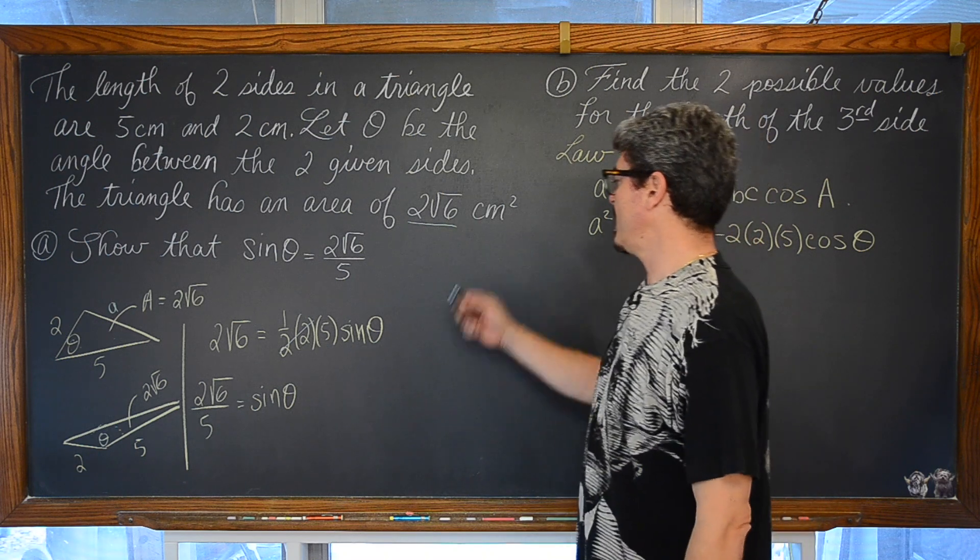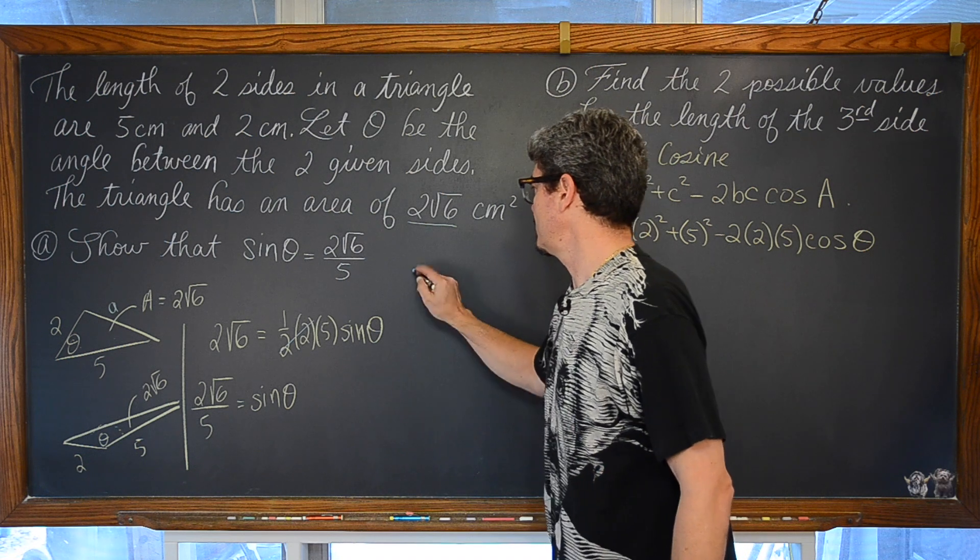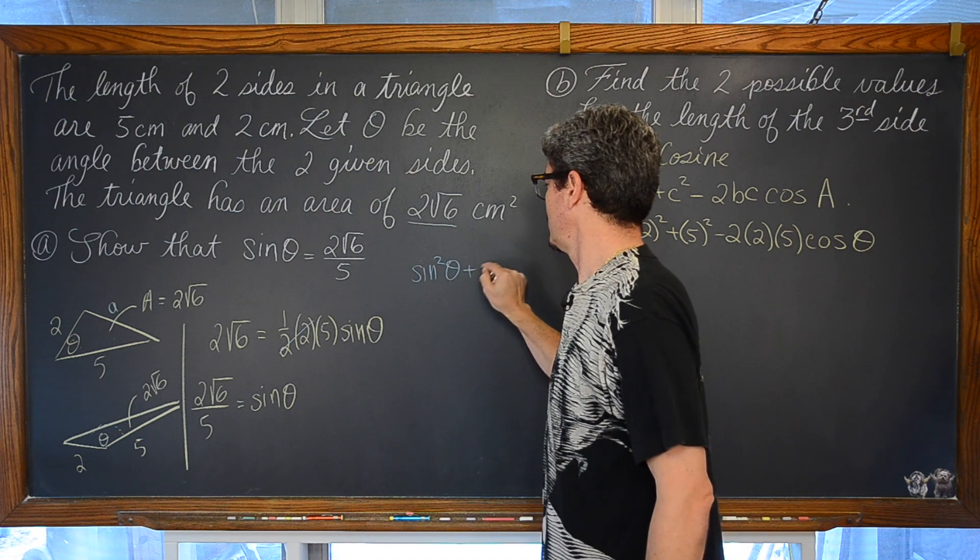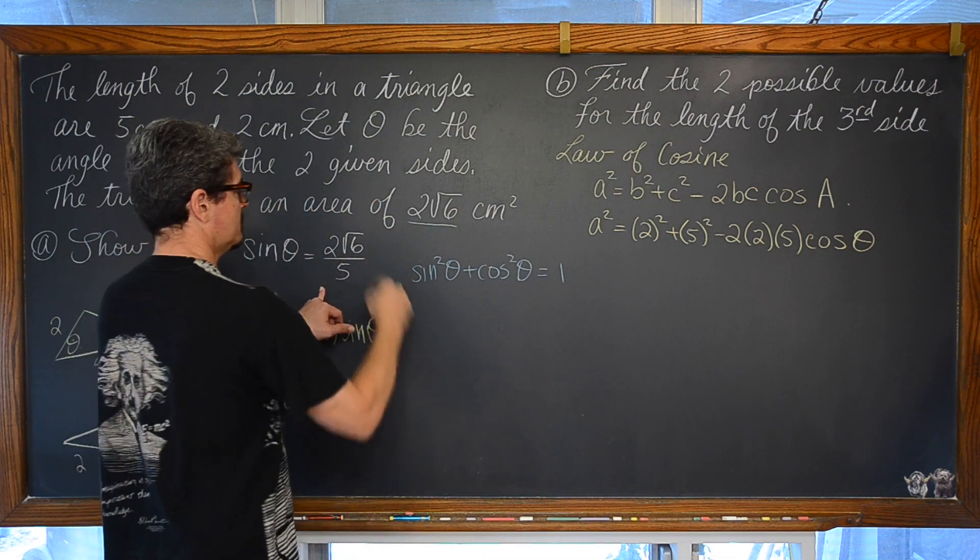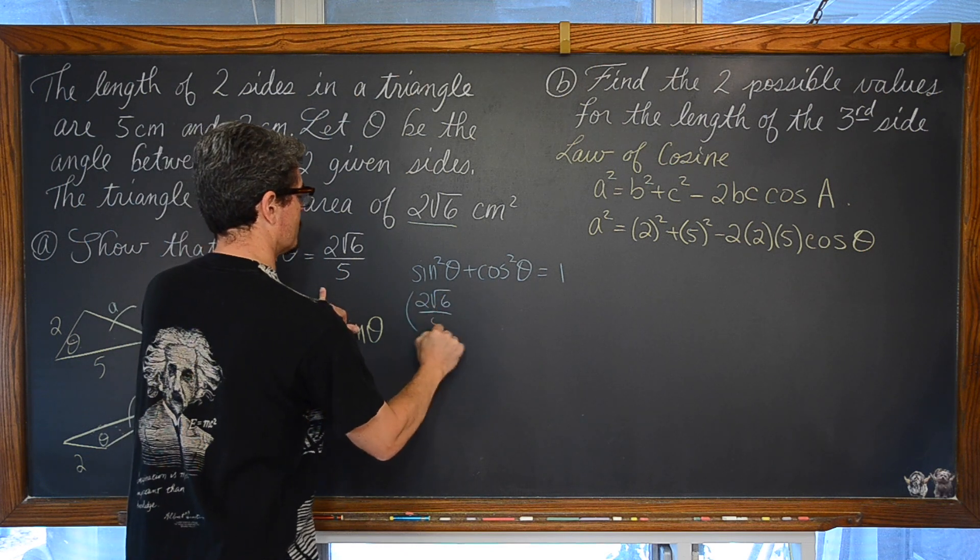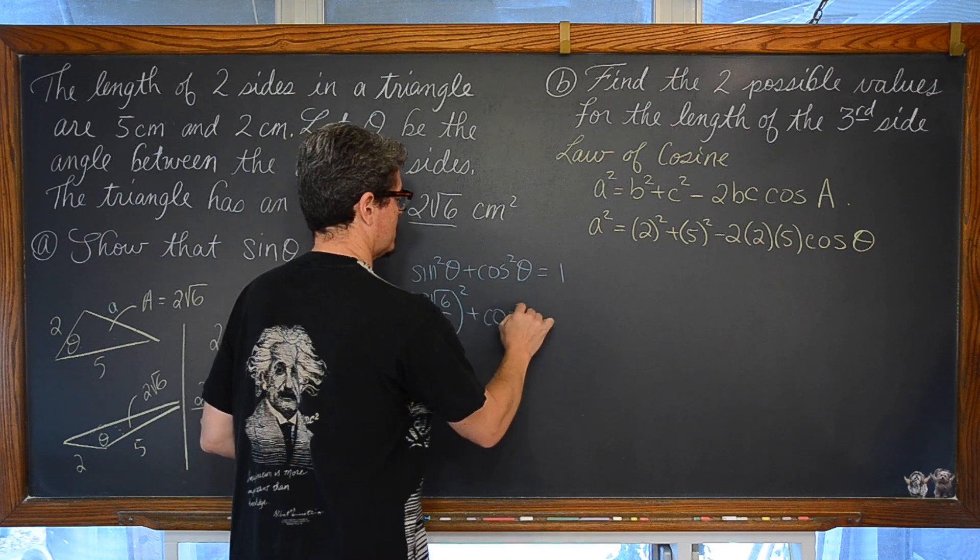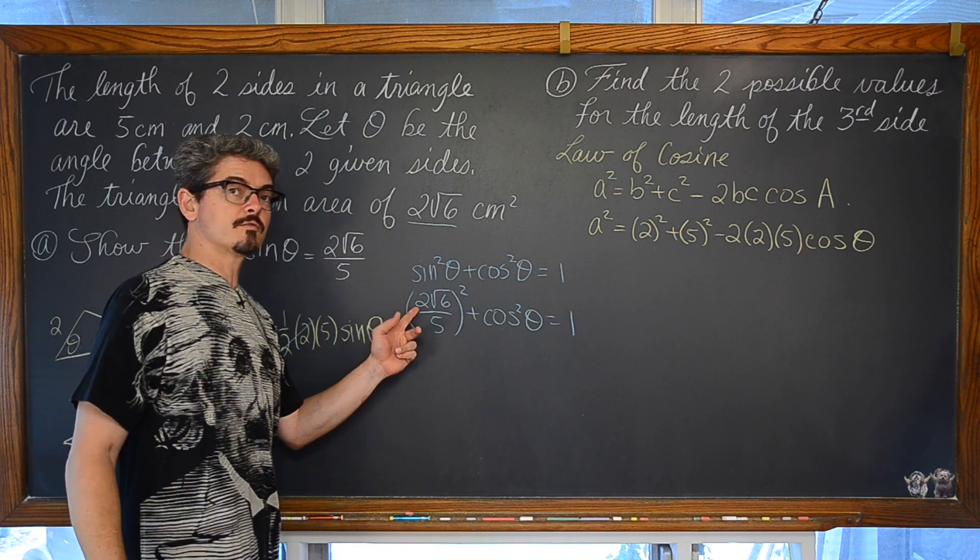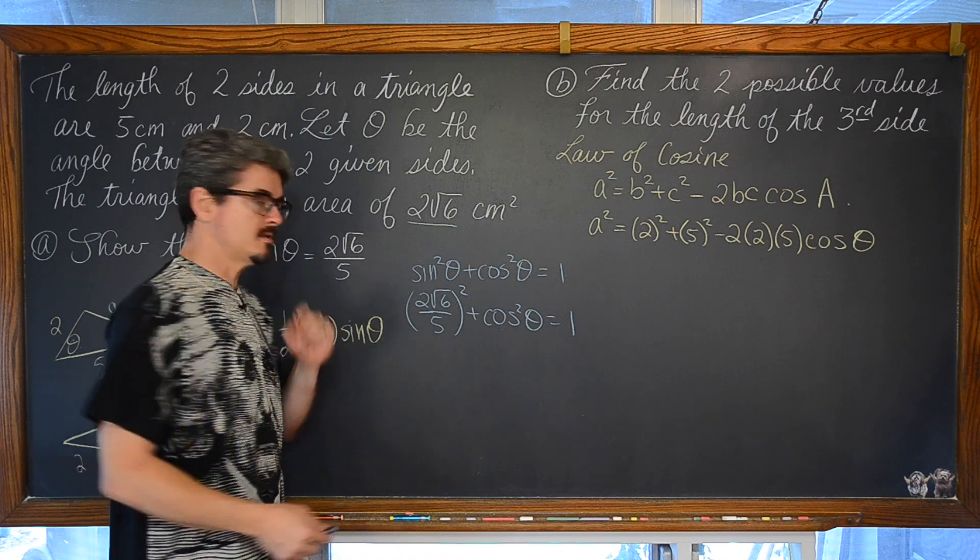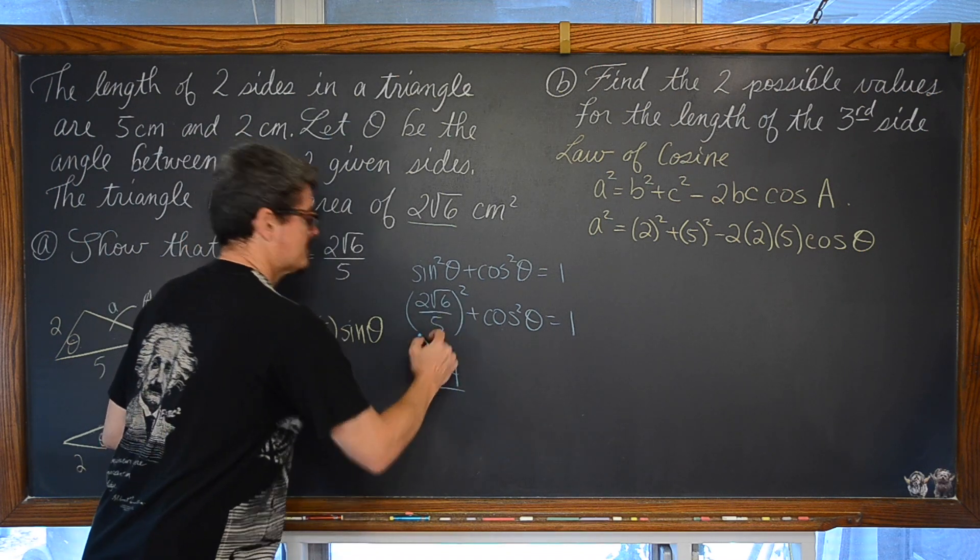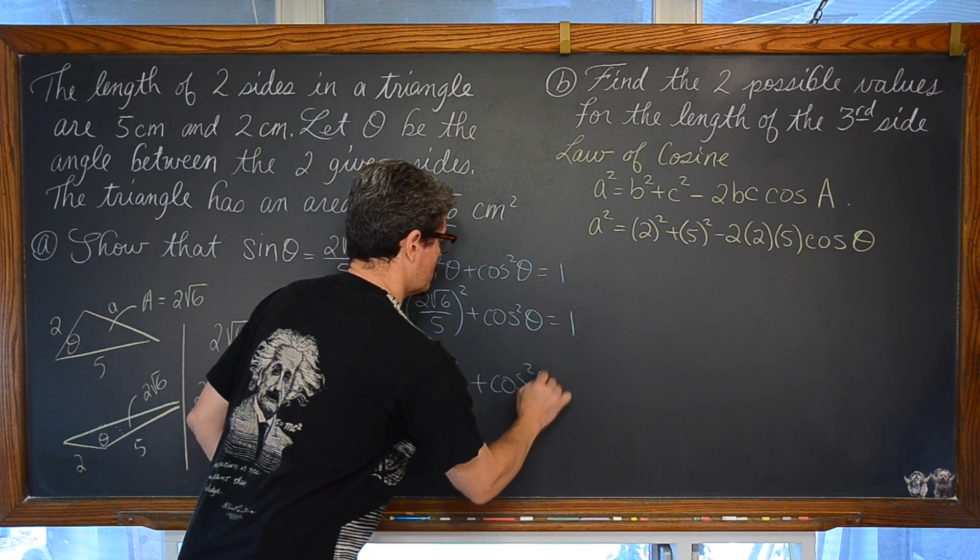So, we are going to be using the fact that we have our Pythagorean identity saying that sine squared theta plus cosine squared theta is equal to 1. Sine of theta is 2 square root of 6 squared over 5 squared. Now, we have plus cosine squared theta equals 1. 2 squared is 4. Sine of theta is 4. Sine of theta is 6. And 4 times 6 is equal to 24 over 5 squared which is 25 plus the cosine squared theta equals 1.